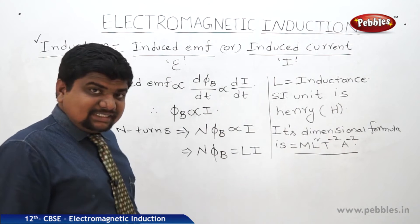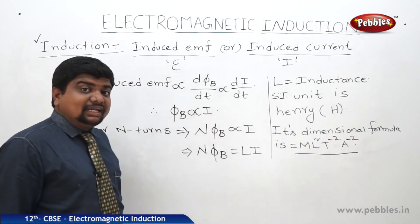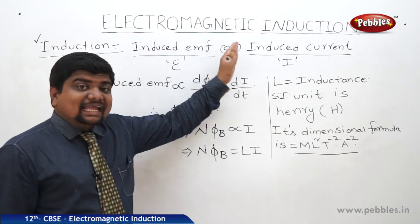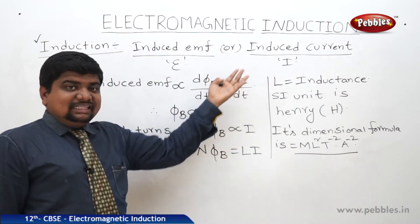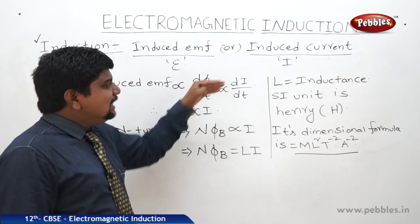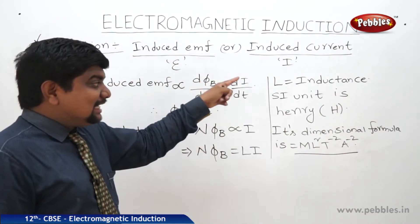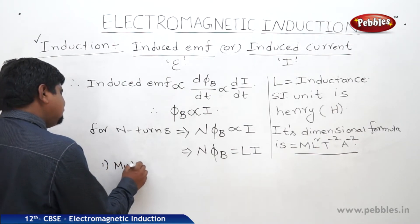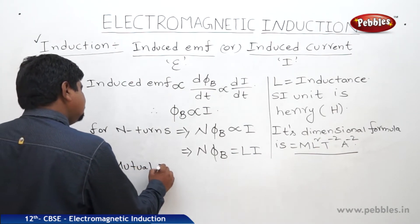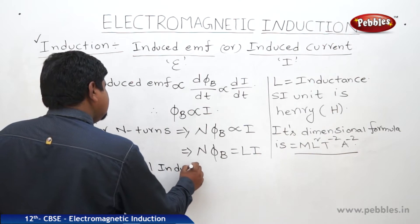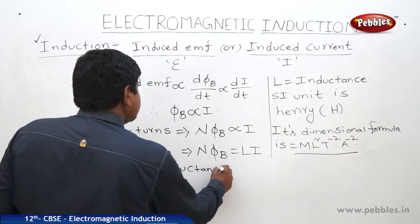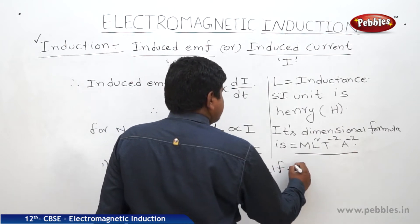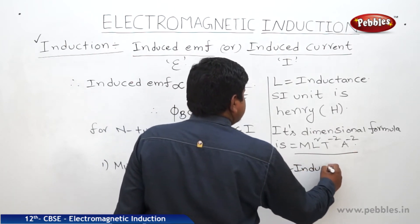So what is the meaning of inductance? Production of induced current due to the change in magnetic flux within a coil is called inductance. This inductance is classified into two types: the first one is mutual inductance, and the second one is self inductance.